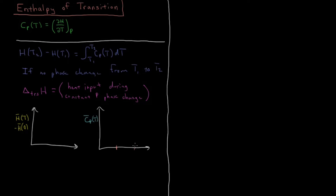We are going to have a couple of marks along the way: one for the melting temperature Tm — the temperature of melting or fusion, whichever you prefer — and then one for the boiling or vaporization temperature. So both graphs will have solid, liquid, and gas regions marked.